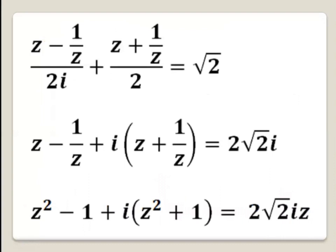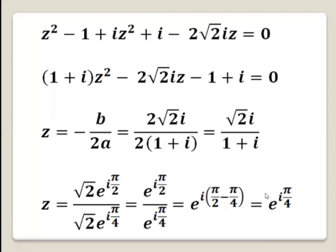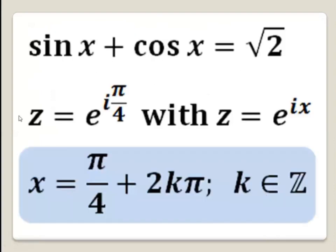From the beginning, we set z equal to e^(ix). So comparing z equals e^(iπ/4) and z equals e^(ix), we have x equals π over 4. To make it more general, x equals π over 4 plus 2kπ, where k is an integer.